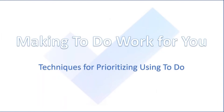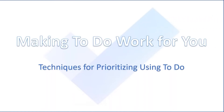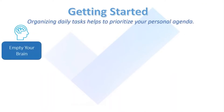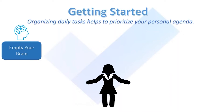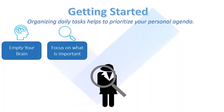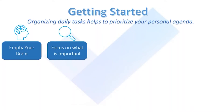Making To Do work for you. We're going to go over some techniques for prioritizing using To Do, and then we'll get into the actual tool. But first, let's think about how you're going to start prioritizing as you put your tasks into To Do. First, you're going to empty your brain — what we call a brain dump — just putting all of your tasks down, getting anything you can think of that you have to do into To Do. And then you're going to start focusing on what's important.